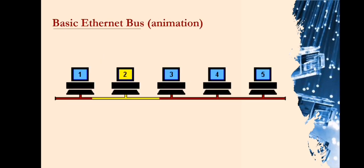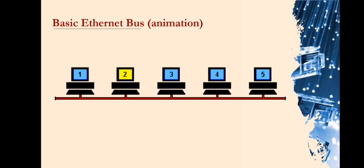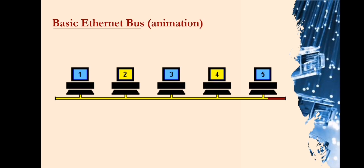Here is an animation of how Ethernet works. This is a basic Ethernet bus — a coax-based Ethernet network where all machines are daisy-chained using RG58 coax cable, sometimes referred to as thin Ethernet. This type of network is no longer used, but understanding how thin Ethernet works explains the very basics of Ethernet operation.